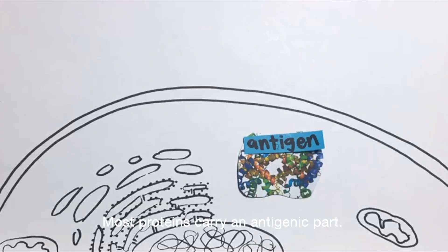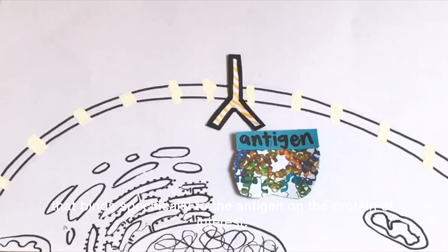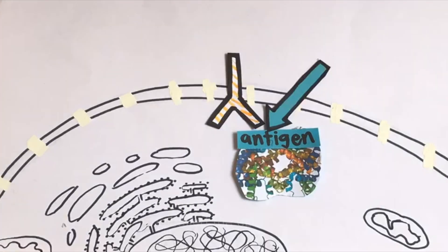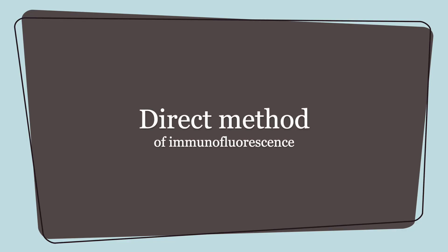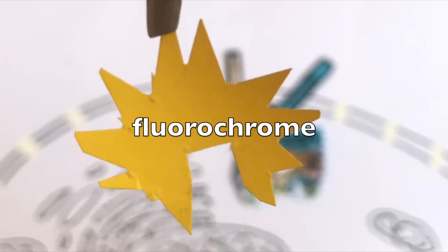Most proteins carry an antigenic part. Immunofluorescence requires the design of a primary antibody that binds specifically to the antigen on the protein of interest. The specific part of antigen where it binds to is called the epitope. In the direct method of immunofluorescence, the primary antibody has a fluorescent tag called fluorochrome.